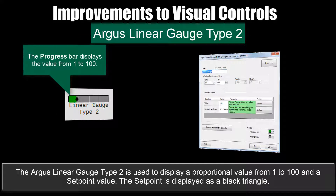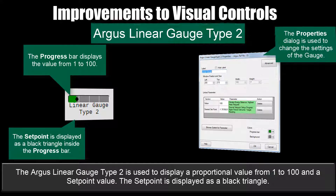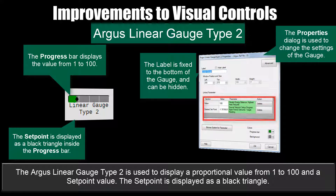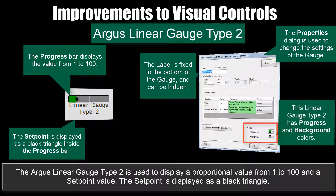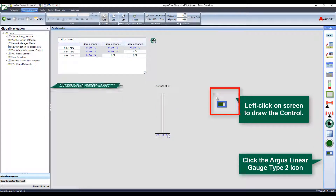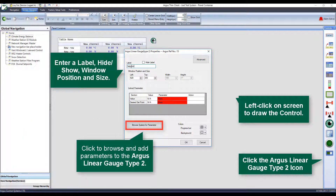The Argus Linear Gauge Type 2 is used to display a proportional value from 1 to 100 and a setpoint value. The desired setpoint displays as a diamond. The label is fixed to the bottom side and can be hidden. You can link a value and the desired setpoint to the control, and you can change the progress bar and background color — the defaults are green and gray. To configure: click the Argus Linear Gauge Type 2 icon, enter a label, options, and window properties, then browse and add parameters.